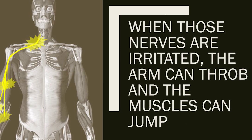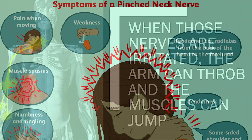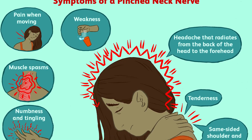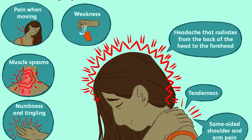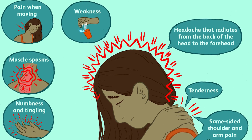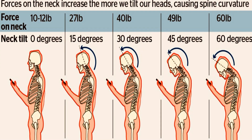How does this occur? Our head weighs 12 pounds, and for every inch it goes forward, it's an additional 10 pounds of force on the neck. You can see this when people are texting — the amount of degrees they're looking down is proportional to the weight force on the neck. The more you look down, the more force on the neck and the more instability the neck is going to have.